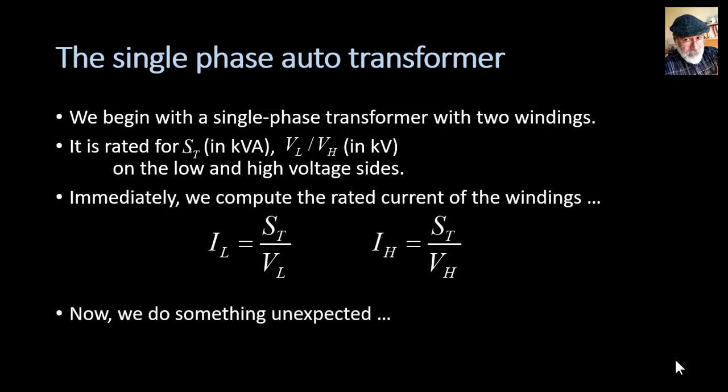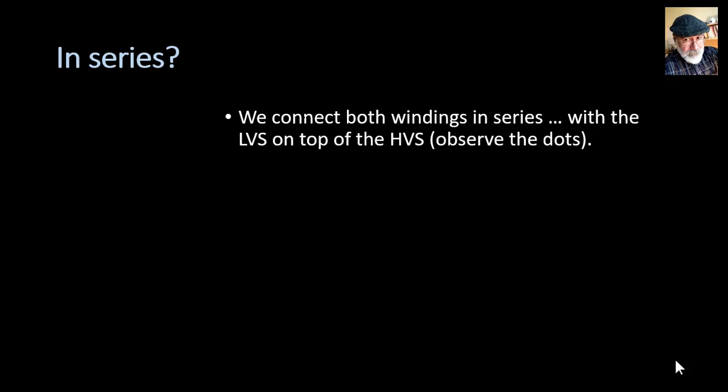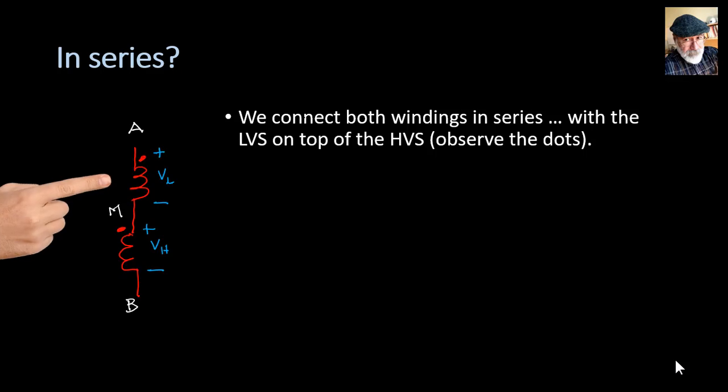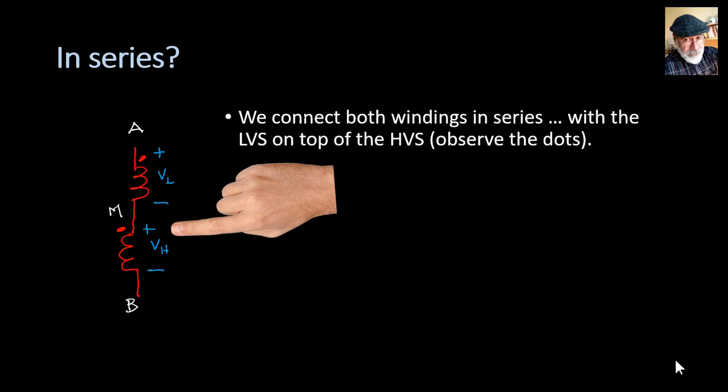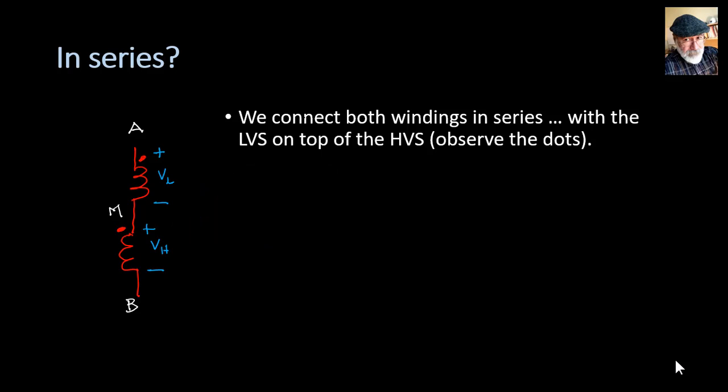Now let's do something unexpected. We take the two windings of the transformer and we connect them in series with the low side on top of the high side. Observe the dots, they're pointing both upwards. I've written there VL and VH as the rated voltages. I'm assuming I'm applying rated voltages to both sides.